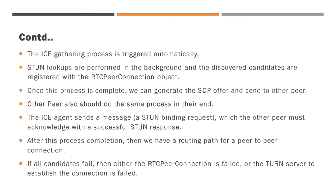Also, one more important point you should understand here. This same process will happen on the remote peer side as well. They also have an ICE agent which will collect the public IP of the remote peer. The other peer must acknowledge with a successful STUN response. After all the process completion, we have a routing path for a peer-to-peer connection. If all candidates fail, then either the RTC peer connection fails or the server to establish the connection fails. This is the overall process of the ICE agent.